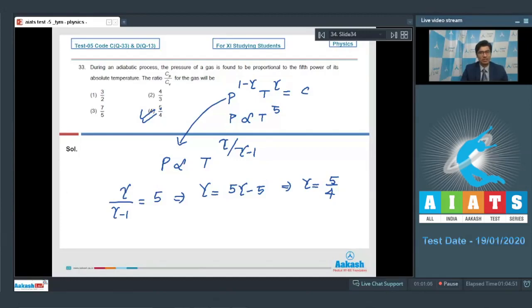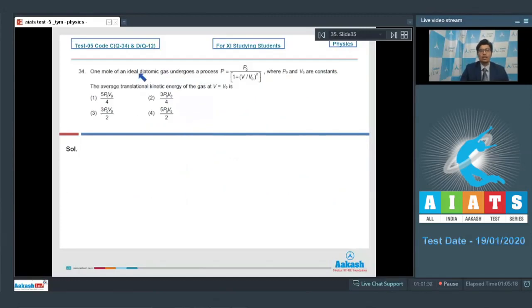Dear students, now let us proceed to the next question, which is question number 34. Question number 34 says, one mole of an adiabatic gas undergoes a process P is equal to P0 by 1 plus V by V0 square, where P0 and V0 are constants. The average translational kinetic energy of the gas at V is equal to V0 is.